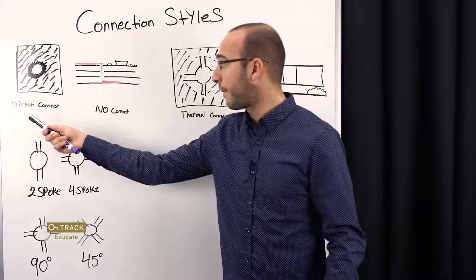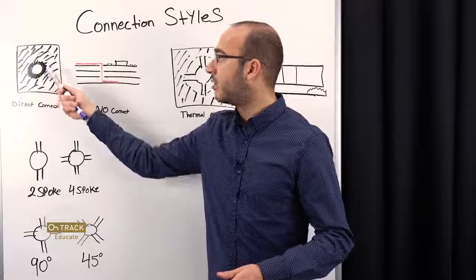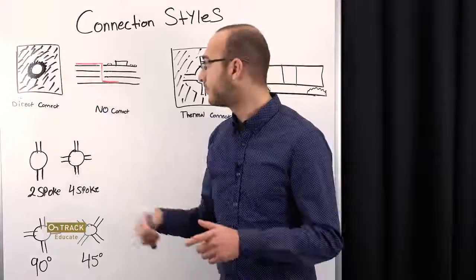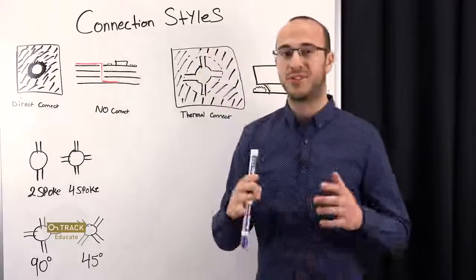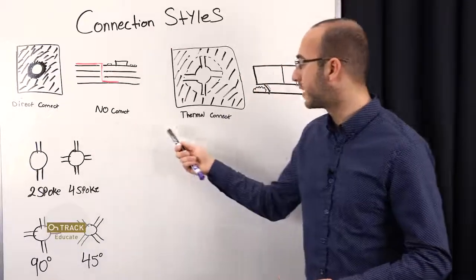So let's get right into it. Direct Connect is when we have a pad or a via connected all around to its surrounding copper. And that's really going to be your default, what you use most of the time. You're going to use it when you don't use a No Connect or a Thermal Connect.